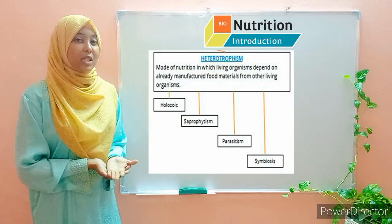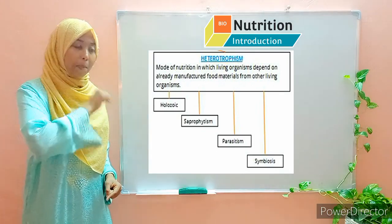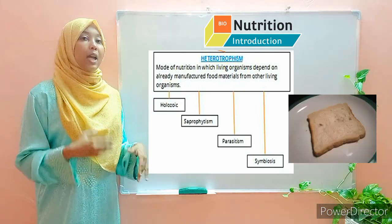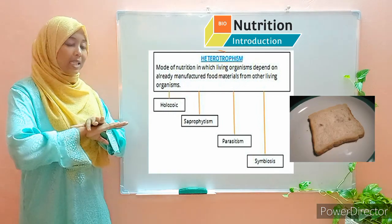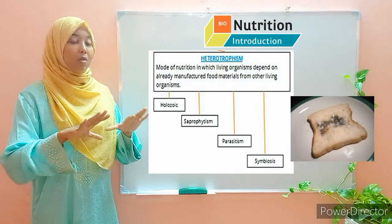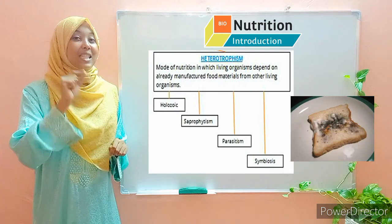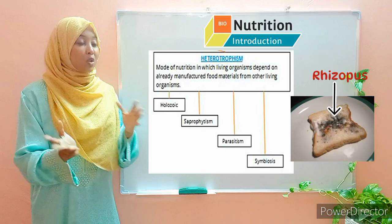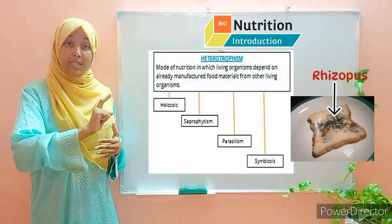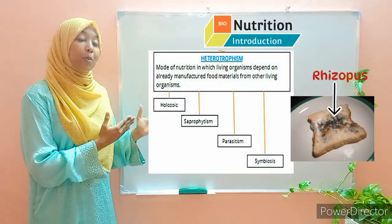Saprophytism is a mode of nutrition whereby organisms obtain their nutrients from dead organic matter. For example, if you take a piece of bread, place it on a surface exposed to the surrounding, and come back a few days later, you'll notice a substance growing on the surface — greenish in color, turning darker and almost blackish when matured. That substance is a living organism — a fungi called Rhizopus, commonly known as bread mold. So here you have an organism feeding on dead organic matter, which in this case is bread, obtaining its nutrients from it. This is a saprophytic fungi.